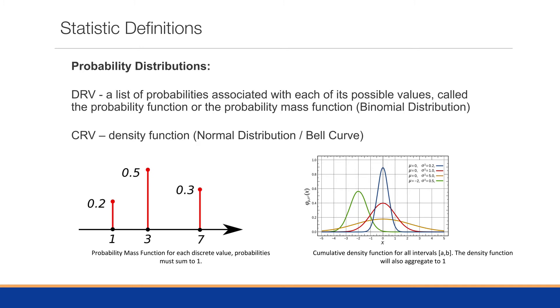The graph on the bottom left is a probability mass function for each discrete value. So for one, there's a 20% chance of it coming up. For three, there's a 50% chance, and at seven, there's a 30% chance, but no other values can possibly come up.